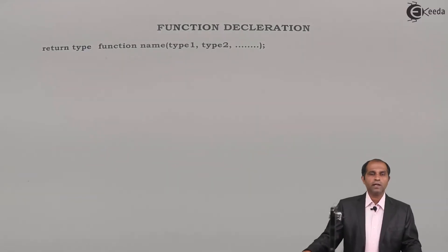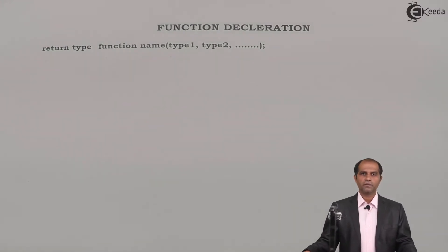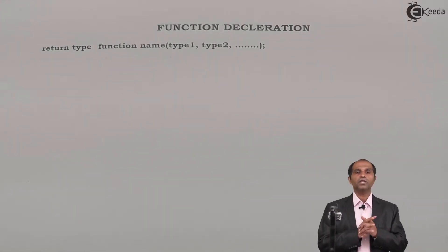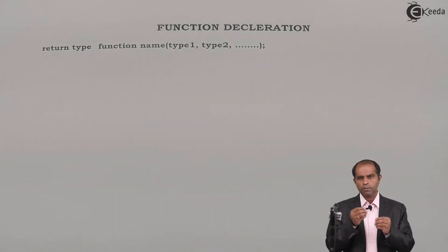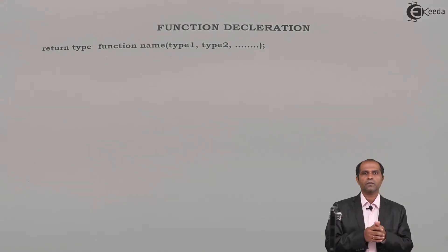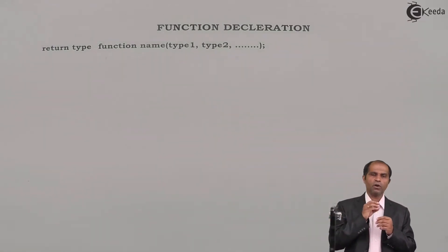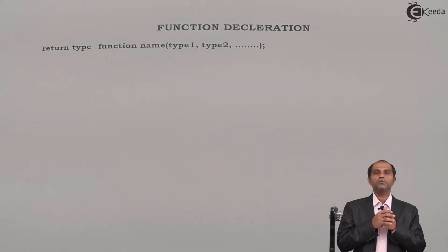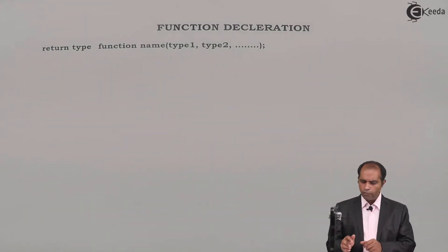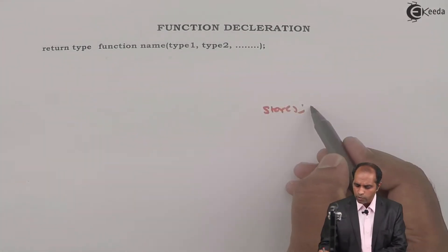Let's look at the third and last component of a function, that is function declaration. We can also call it a function prototype — a very important concept when it comes to program execution. We've seen two components of functions: one is function definition, which resides outside main, and function call, which resides in main. Now, when I say a function call, it will take you to the definition.